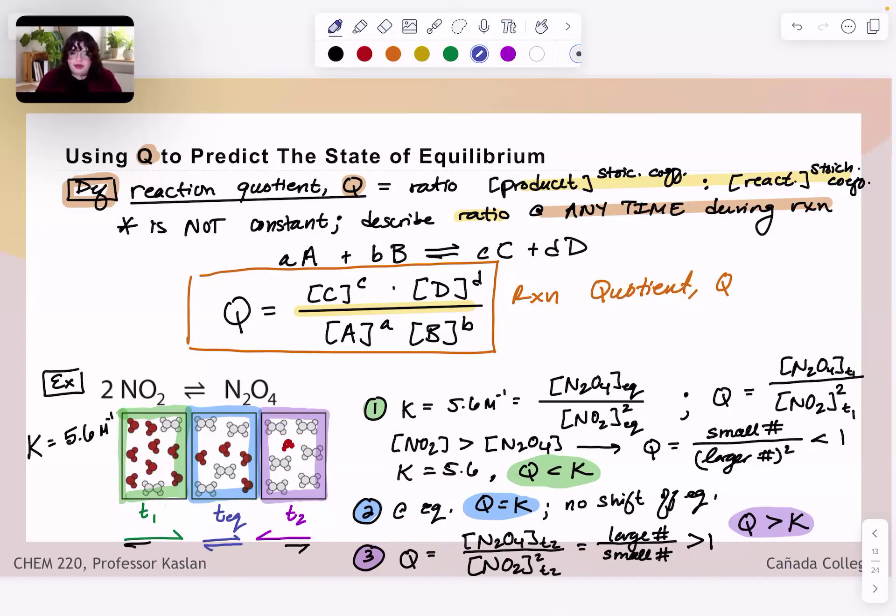So this is the reaction quotient and how it relates to K. It's generally good knowledge just to have because it allows you to make predictions about our state of equilibrium or how our reaction, from its initial conditions to its process to getting to equilibrium, how it might proceed. Right? Is that a forward-driven reaction in this scenario one here, like our green box, or would it be a reverse-driven reaction like the scenario here in our purple box?